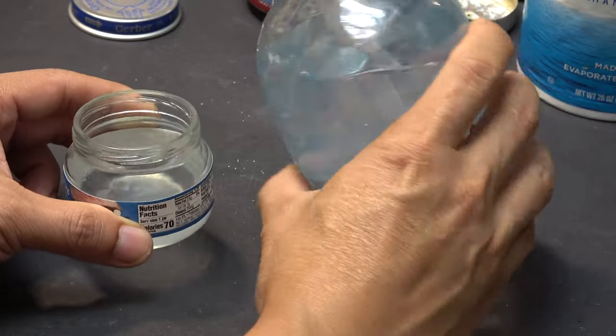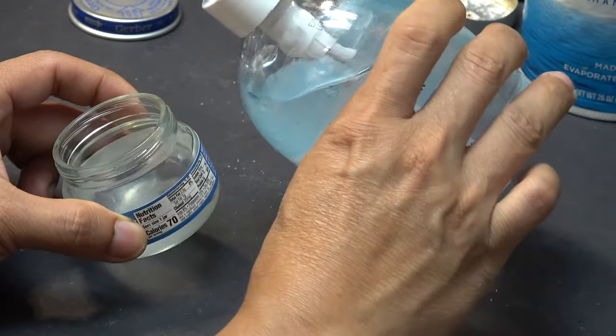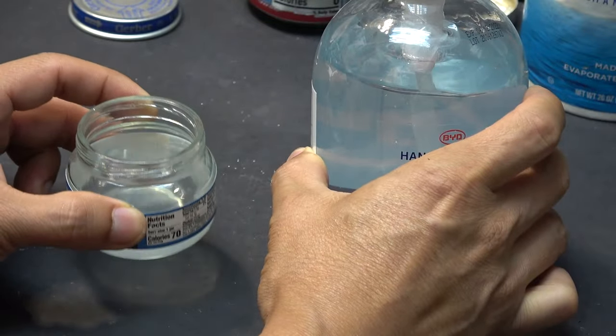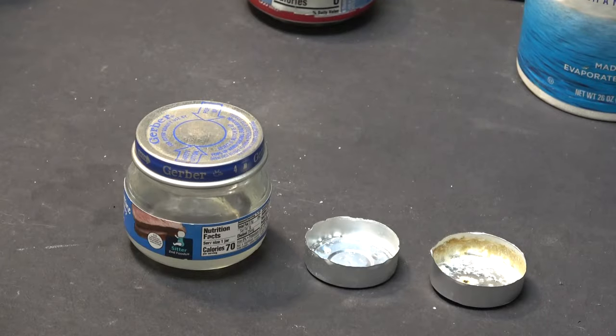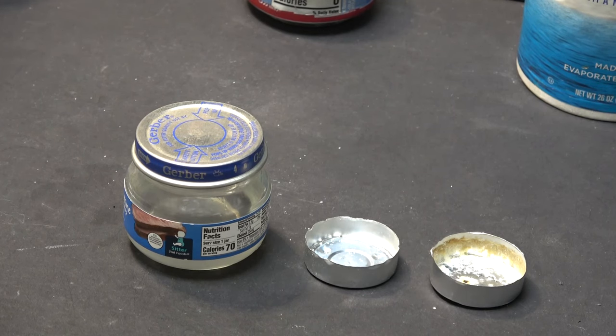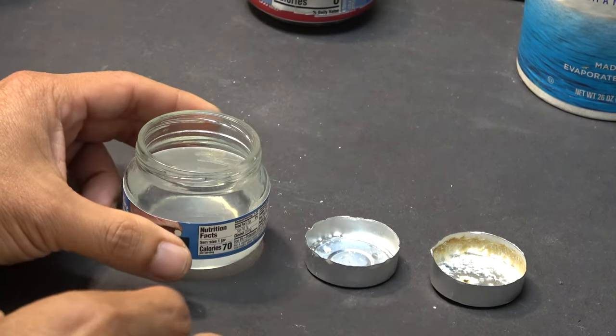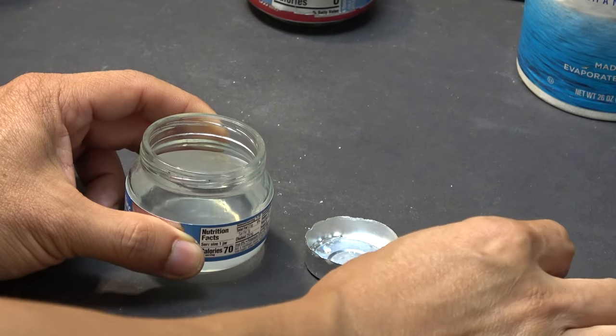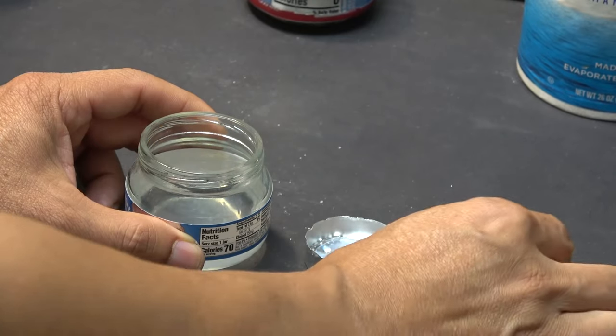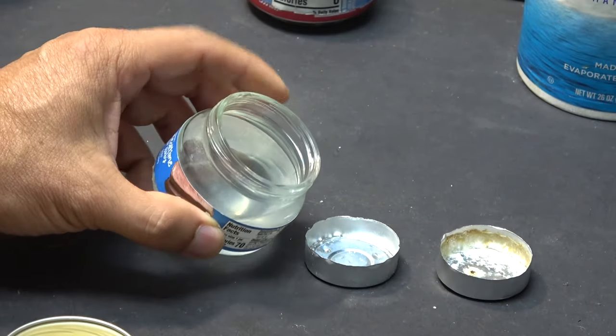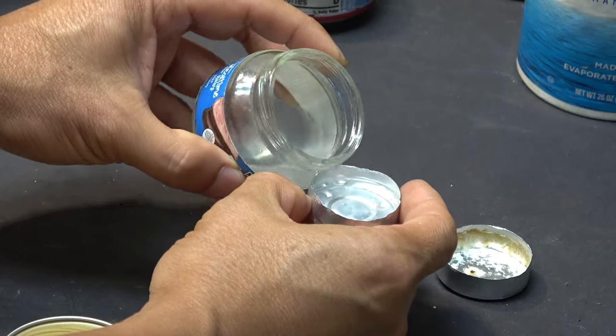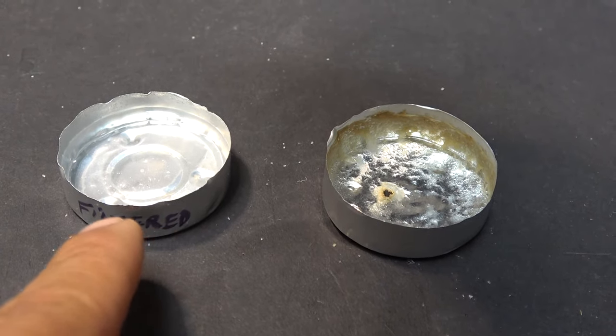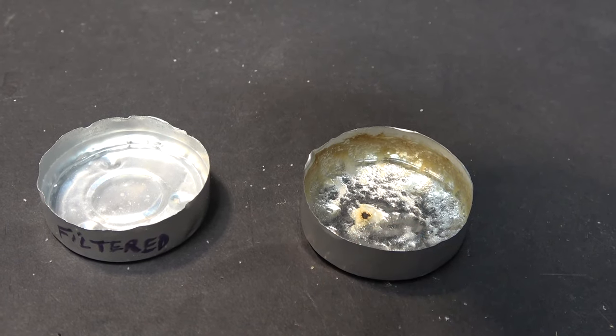Now you can see this liquid here, it's much less viscous than the hand sanitizer on the right side. And that's it, we are done. Now all we have to do is burn it. First, I want to compare this with the hand sanitizer before the filtration. Let's put some in here and we're gonna burn it. I'm gonna label it 'filter' so I can tell the difference.